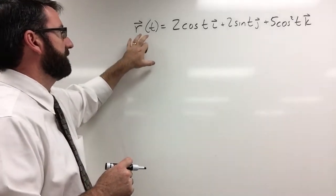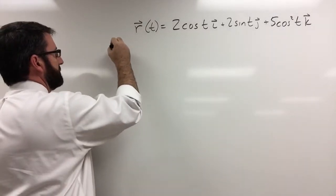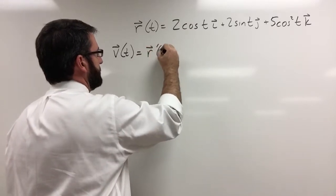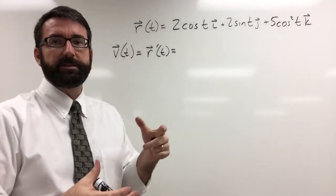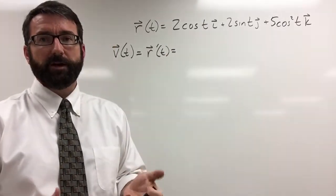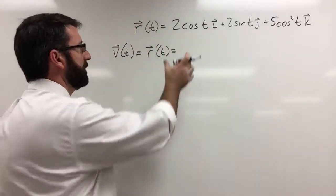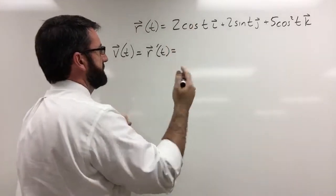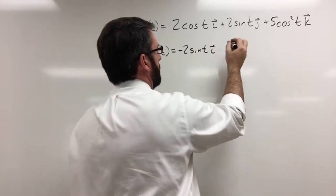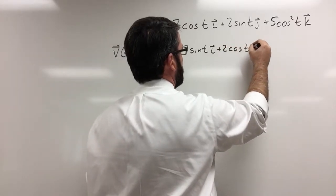The velocity vector is going to be given by the derivative of the position vector. So this velocity vector is r prime of t. To find the derivative of a vector function, we're just going to take the derivative of each of the component functions. The derivative of cosine is negative sine, so this is negative 2 sine of t i. And then the derivative of sine is cosine, so plus 2 cosine t j.